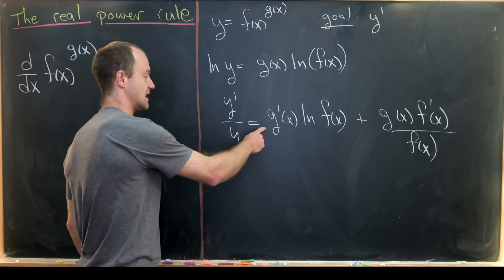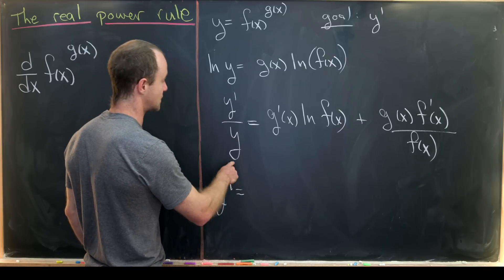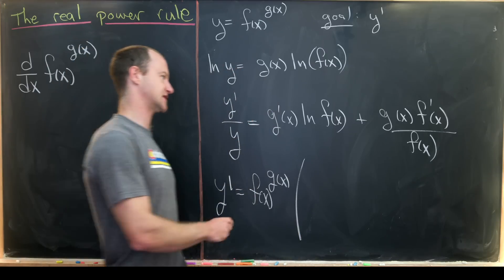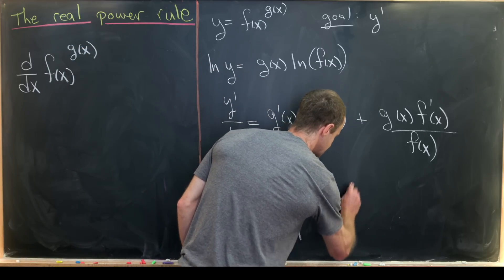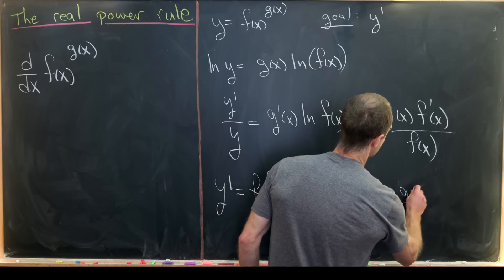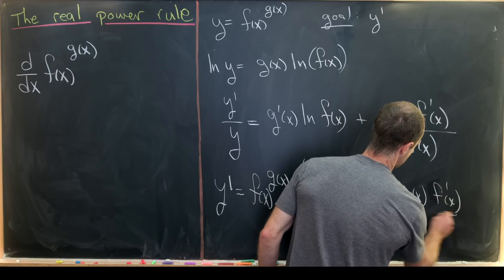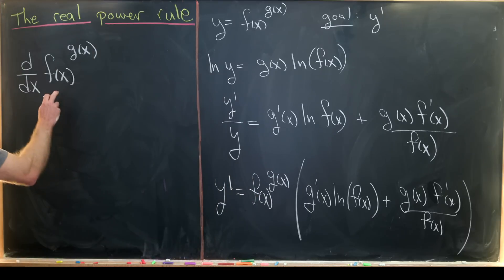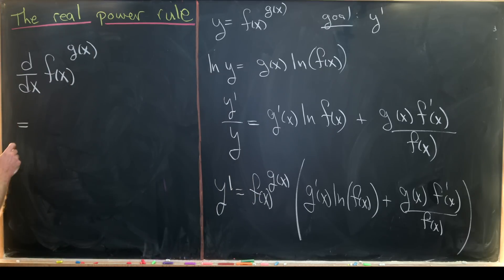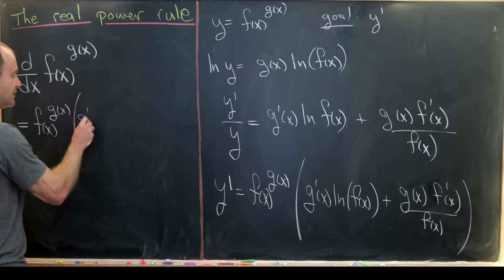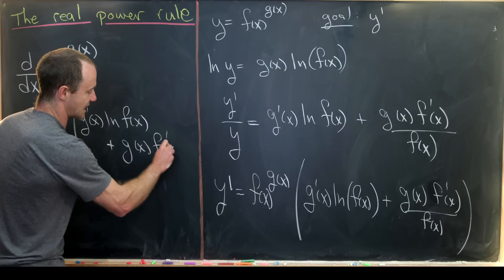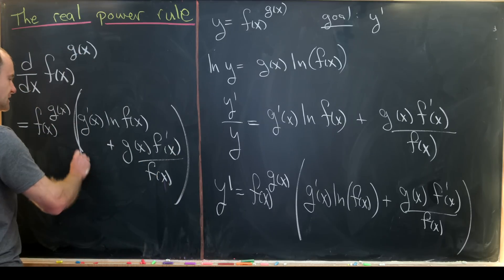From there, we multiply both sides by y to get y prime equals y — but y is f(x) to the g(x) — times the big expression: g prime(x) times the natural log of f(x), plus g(x) times f prime(x) over f(x). So our real power rule in closed form is: f(x)^g(x) times the quantity g prime(x) · ln(f(x)) plus g(x) · f prime(x) / f(x).